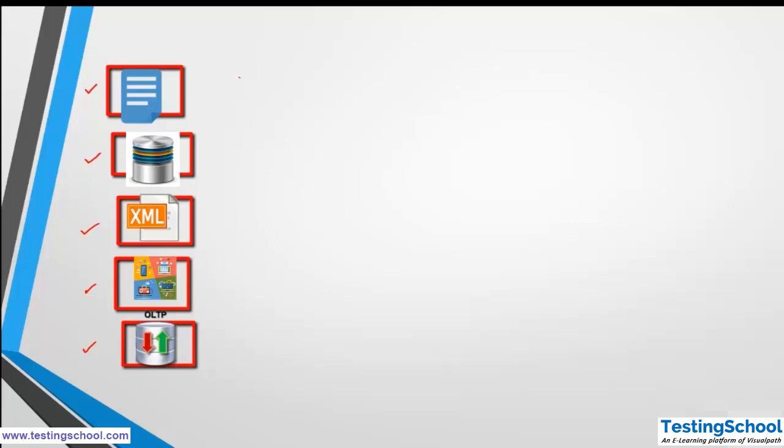Once you have all the data coming in from your data sources, you have an ETL tool with which you load the data or read the data first and you create something called as a staging area. So using the ETL tool, you read all of these data, extract it, and put it into your staging area.